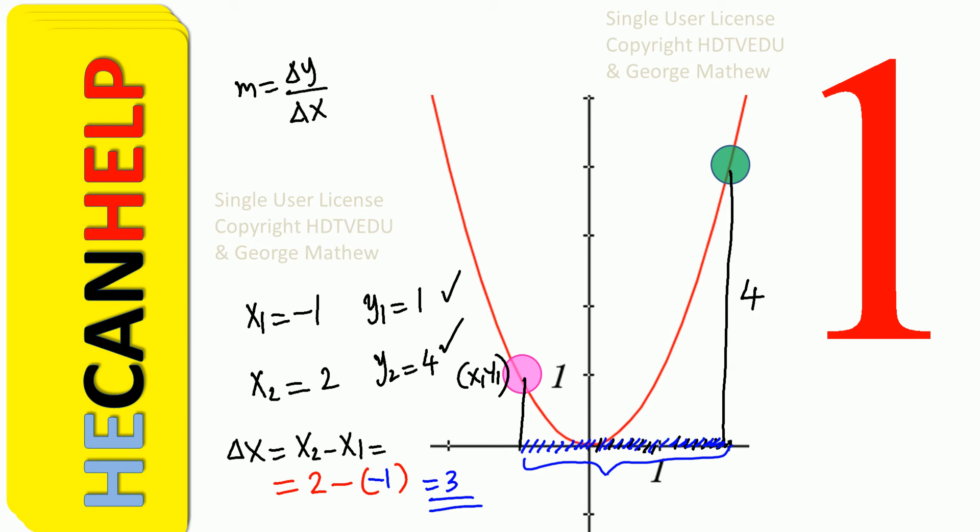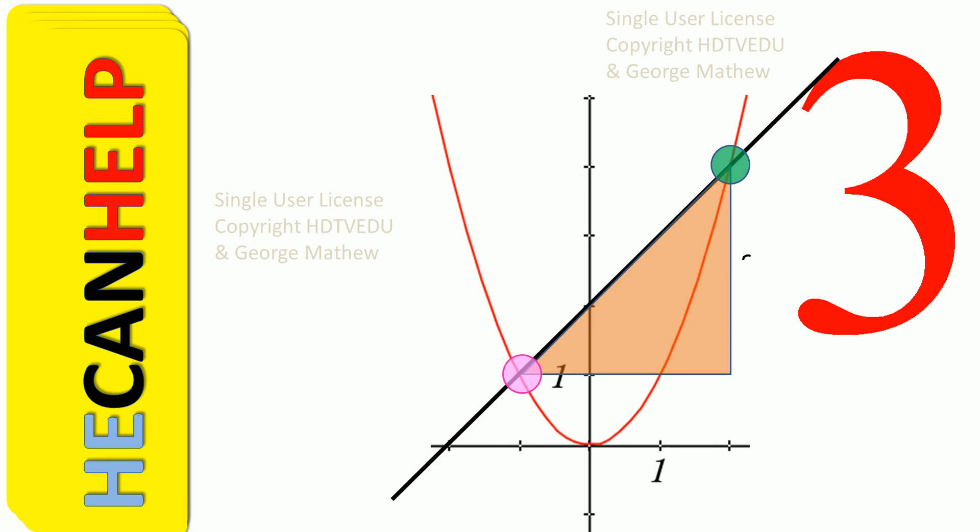How about change in y? Change in y is y2 minus y1, and so it is 4 minus 1, and that is equal to 3. So change in y is 3. Change in x is 3. So this is 3, and this is 3, because this is 1, and this is 2, and that is 3.